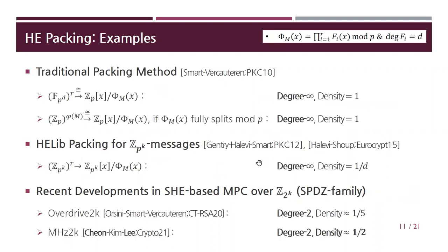Here are some examples of HE packings. The traditional packing method by Smart and Vercauteren packs messages through CRT ring isomorphism, so their method naturally has degree infinity and perfect density of one — the special case where the cyclotomic polynomial fully splits modulo p. This is still universally used in HE applications. A limitation of the traditional method is that it does not provide packing for general Z/p^k, especially when p is small.